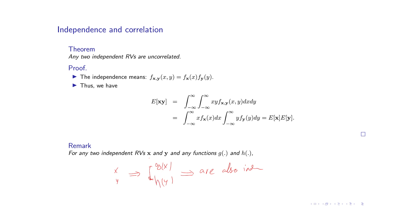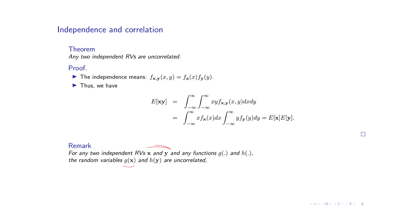This means that any joint moment which involves functions of x and y can also be decomposed — that moment can be simplified. So if x and y are independent, the random variables g(x) and h(y) shall also be uncorrelated. Independence is not just uncorrelatedness of the two random variables themselves, but also uncorrelatedness of any function of x with any function of y.